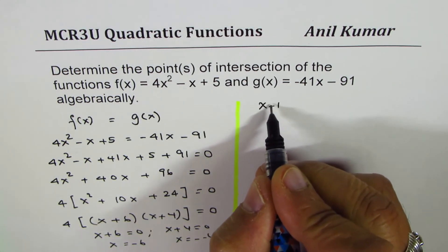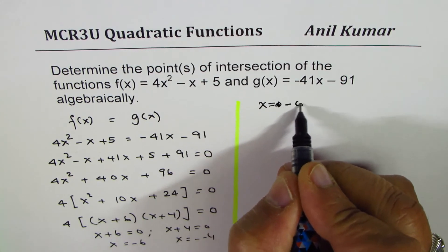Now, you could use any one of these equations to find the y coordinates. When x = -6,